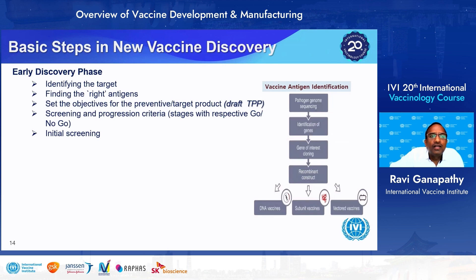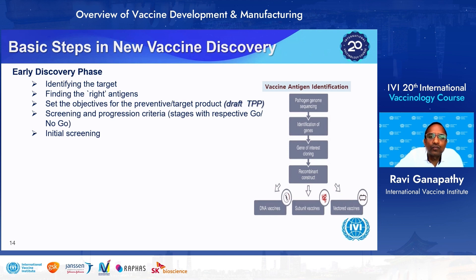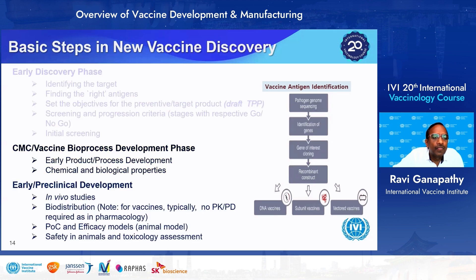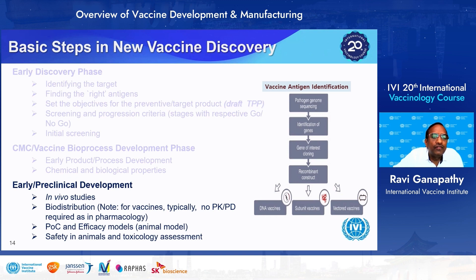There are three steps in vaccine discovery. The antigen discovery phase identifies the target: the pathogen gene is sequenced, genes of interest are identified, the gene of interest is cloned into a recombinant construct, and then a decision is made to go through a DNA vaccine, subunit vaccine, or vector vaccine mode. For whole-cell or live-attenuated vaccines, it's a different platform. Then follows the CMC or vaccine bioprocess development phase with early product-process development, followed by the early clinical-preclinical development phase including proof-of-concept and efficacy models in animals, safety assessment, and toxicology.